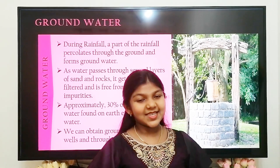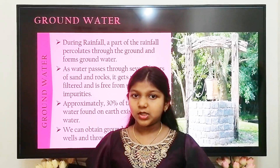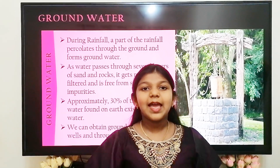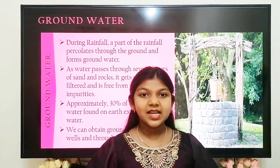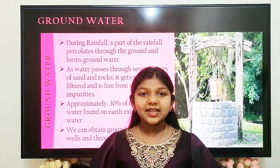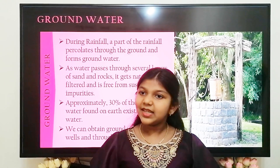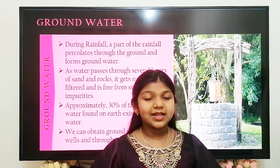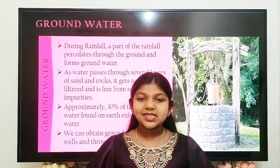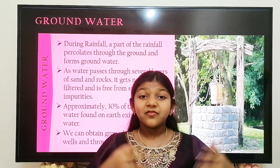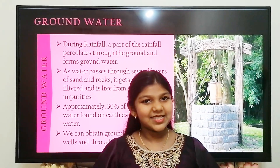Next, we are going to see about groundwater. During rainfall, a part of rain water percolates through soil and forms groundwater. As water passes through various layers of sand and rocks, it gets naturally filtered and is free from suspended impurities. Approximately 30% of the fresh water found on earth exists as groundwater. We can obtain groundwater by digging wells and through tube wells.